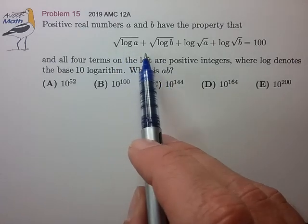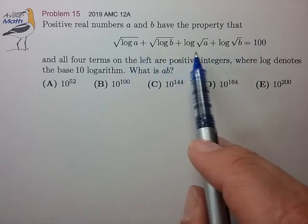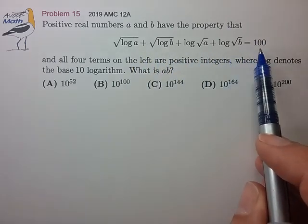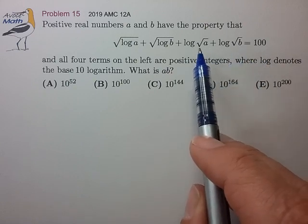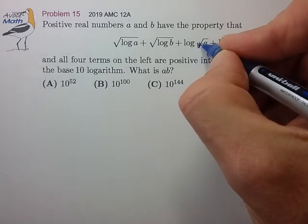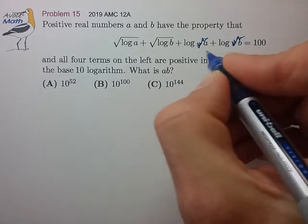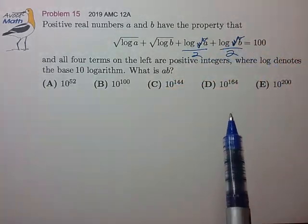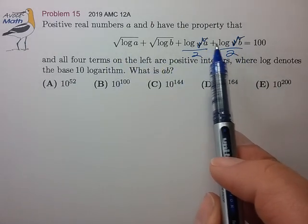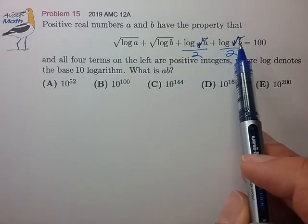We have this messy log expression. All terms are integers summing to 100 and I see an opportunity to take the exponent rule for log to get rid of the square root signs and just divide out by 2. Let's examine these terms and see what this tells us about the variables a and b.